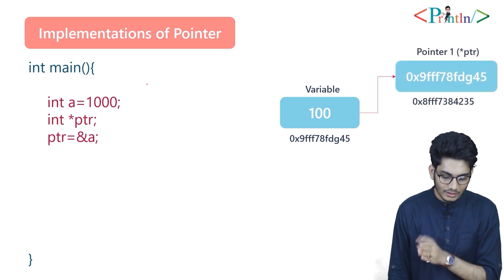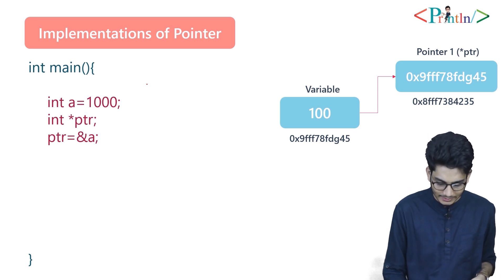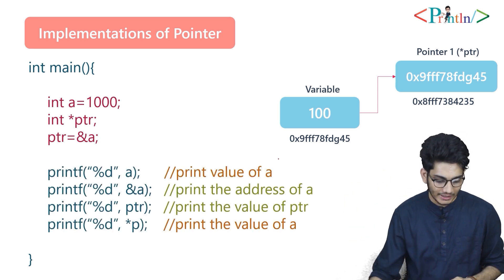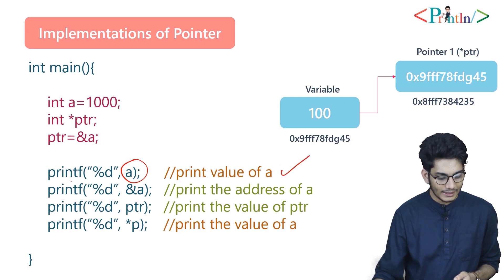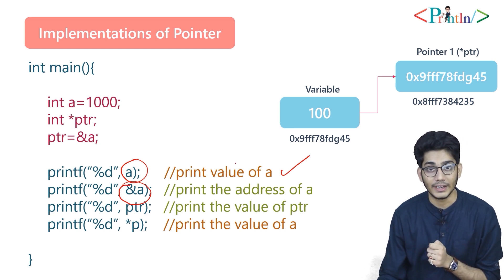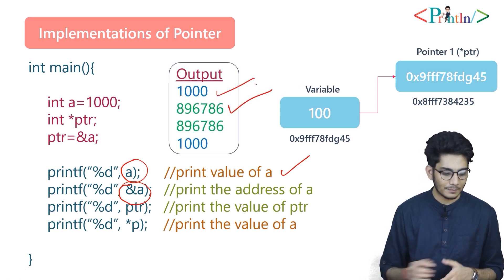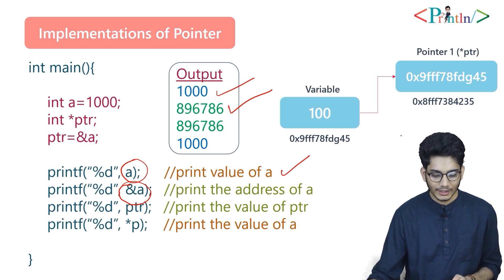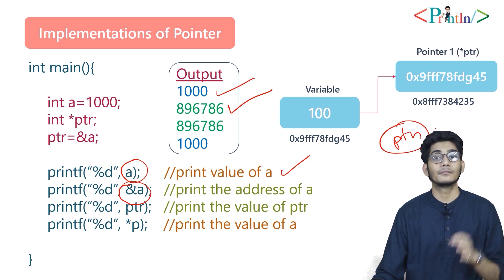Now we will see how we can implement this pointer. At first we declare a variable, then we declare 'int *ptr', then we store the address of 'a' into ptr. We have four printing statements. First, we are printing the value of 'a'. When we use ampersand, we are printing the address of 'a'. When we print ptr, we are printing the value of ptr — which is the address of 'a'. And *ptr has a special significance — whenever we use star, it will go one step back and print the value.